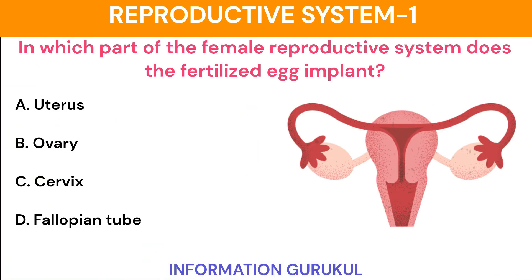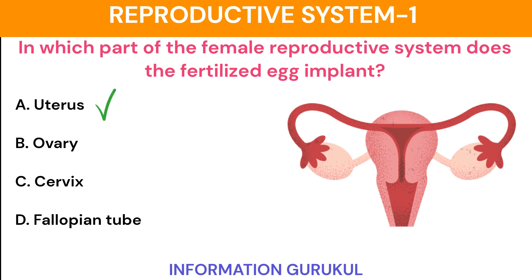In which part of the female reproductive system does the fertilized egg implant? Uterus.